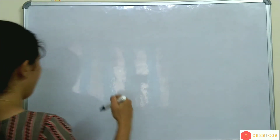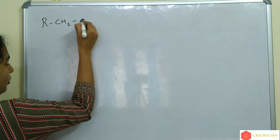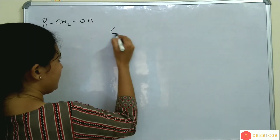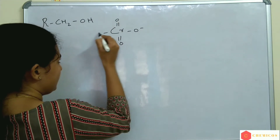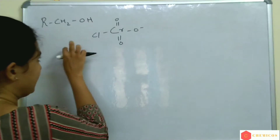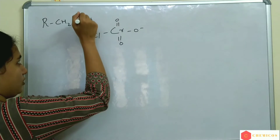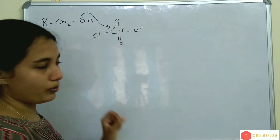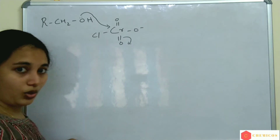Let's take a simple primary alcohol R-CH₂-OH. This is a primary alcohol. Now the lone pairs of oxygen are shifted to chromium, and these two form a bond. Naturally, these electrons are shifted to oxygen.